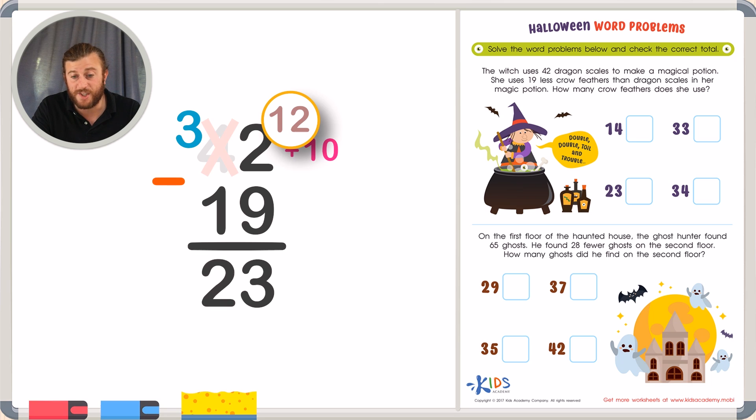We know she has 23 crow feathers in her magical potion. Because 42 minus 19 is 23. Meaning 19 less than 42 is 23. Giving us 23 crow feathers in her magical potion. So one less scary tip is that when you see the word less than, you can usually bet that it is a subtraction problem.